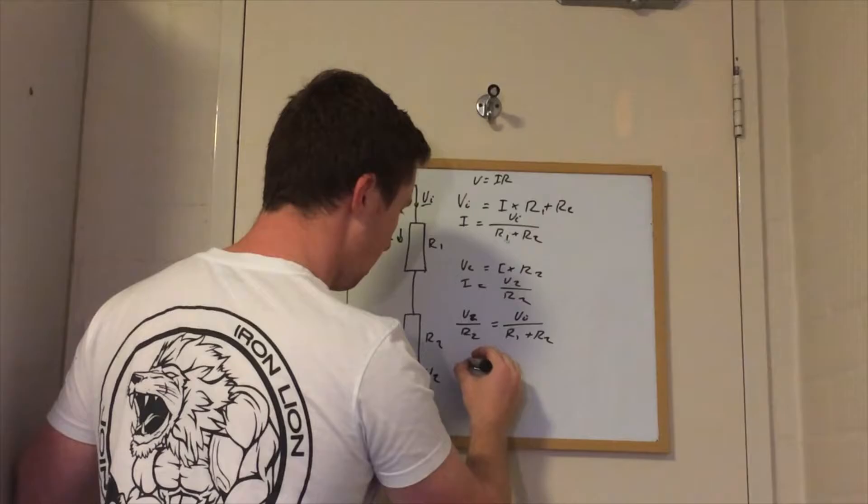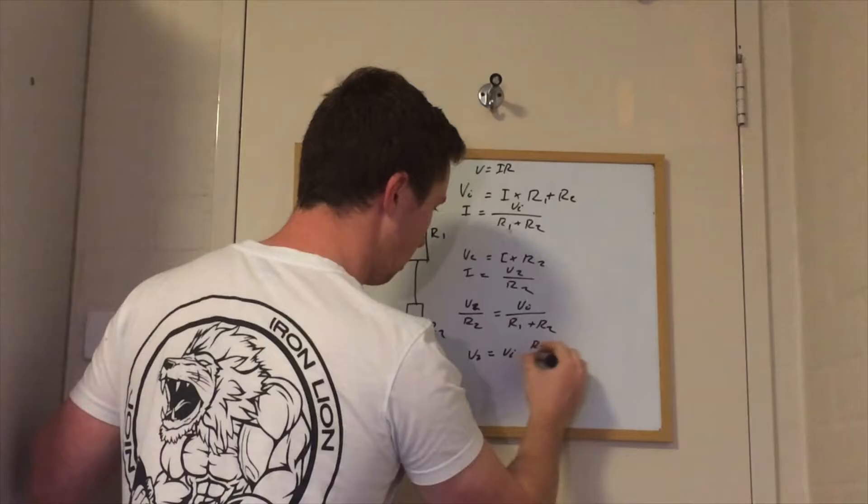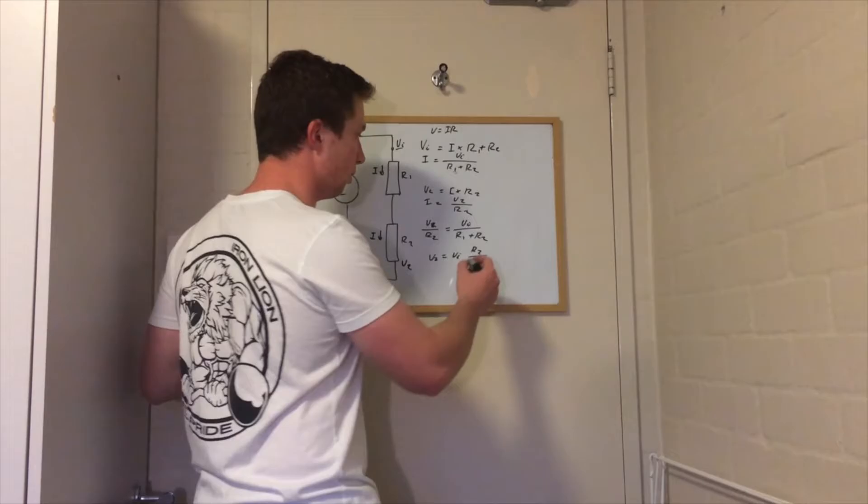So we can set these equal to each other: VI over R1 plus R2. Rearranging that, we get V2 equals VI times R2 over R1 plus R2.